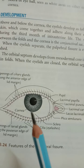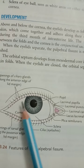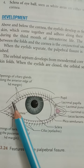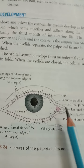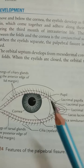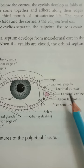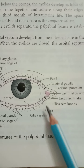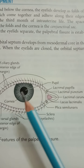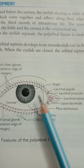Each eyelid is attached to the margin of the orbital opening. The free edge is broad with a rounded outer lip and a sharp inner lip. The outer lip presents two to three rows of eyelashes, except at the boundary of the lacus lacrimalis where eyelashes are absent, forming the lacrimal papillae. Near the inner lip there is a row of openings of the tarsal glands.